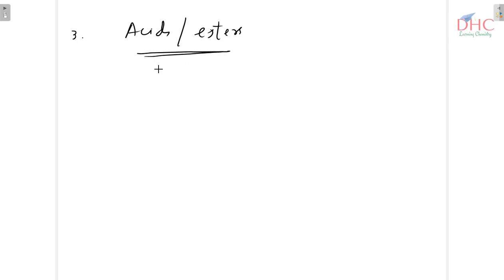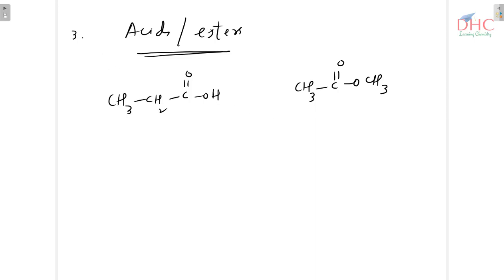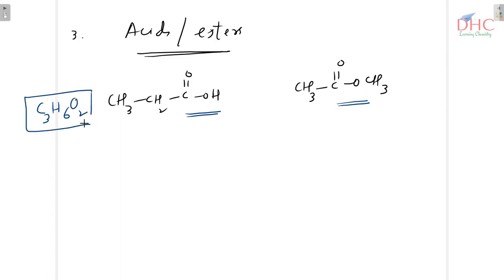The third category is acids and esters. Carboxylic acids, for example CH3-CH2-C(=O)OH (propanoic acid), and esters such as CH3-C(=O)-O-CH3, are functional isomers. They have the same molecular formula but different functional groups — the carboxyl group versus the ester group.